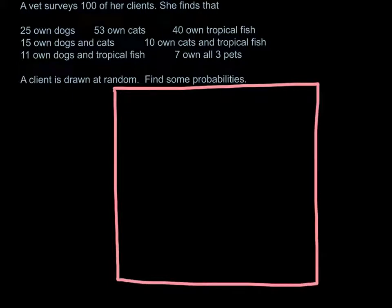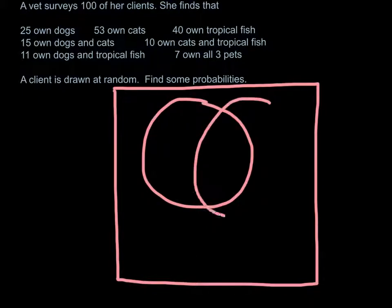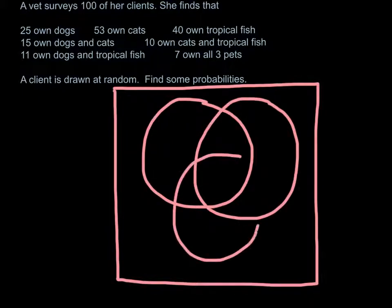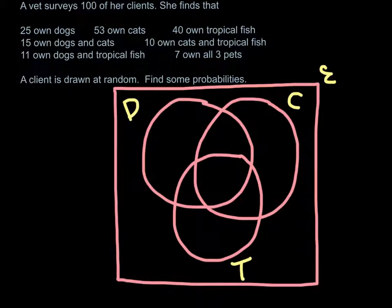So one representing dogs, cats, and tropical fish. And you want to, almost like the Olympic logo, have them all intersecting each other. So we'll have dogs there, cats there, and tropical fish there. And obviously remember, you've got the entire set as well.